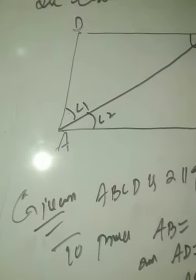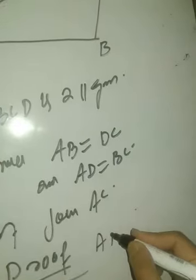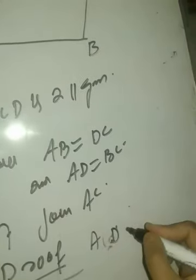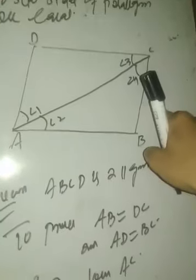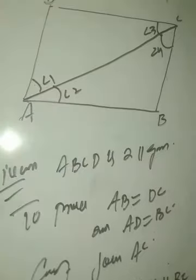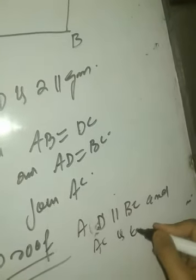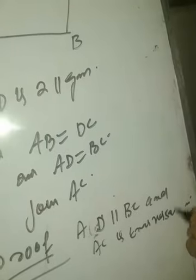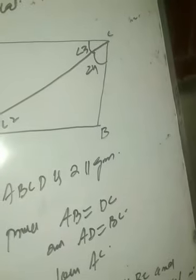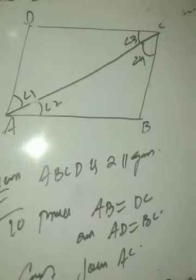We write: AD ∥ BC — why? Because this is a parallelogram, and by definition opposite sides of a parallelogram are parallel. AC is a transversal. Therefore angle 1 equals angle 4, because they are alternate interior angles.